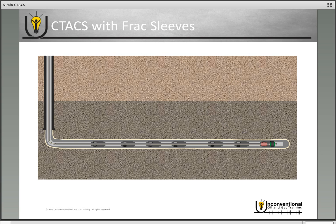You locate that assembly in the first stage frack sleeve. Each service company's opening mechanism for the frack sleeves is a little bit different, so for specifics on how to open these frack sleeves please see your service provider. Overall the functionality is the same — you locate your coil tubing assembly in the frack sleeve and open it to perform that stage fracturing. Unset your packer, move up the wellbore, locate the second sleeve, reset your packer for isolation, open the second stage frack sleeve, and perform your second stage frack job. Then you're just repeating the process, moving up hole to the next sleeve and performing that stage fracture until all the sleeves in the well are fractured.